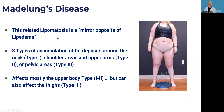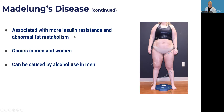Madelung's disease is sort of the mirror opposite of lipedema — the adipose tissue accumulates disproportionately in the upper extremity. Type one is around the neck, type two includes the arms, and type three includes the pelvic area and thighs. It's associated with more insulin resistance and abnormal fat metabolism. It occurs in both men and women, and when it occurs in men it's more often related to alcohol.